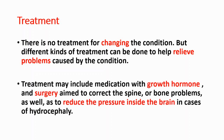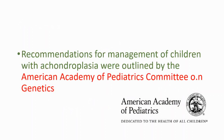Treatment may include medication with growth hormone and surgery aimed to correct the spine or bone problems, as well as to reduce the pressure inside the brain in cases of hydrocephalus. The American Academy of Pediatrics committee on genetics has some recommendations for management of children with achondroplasia.